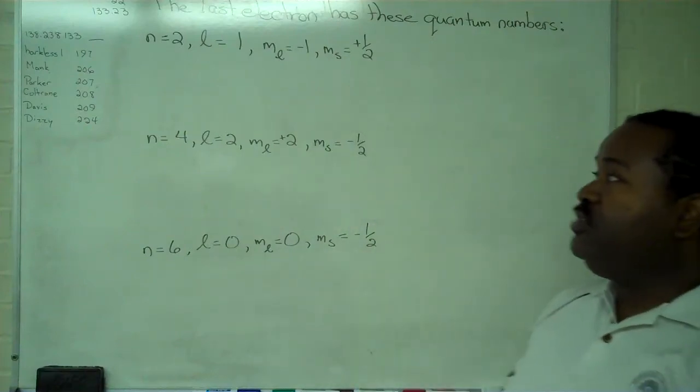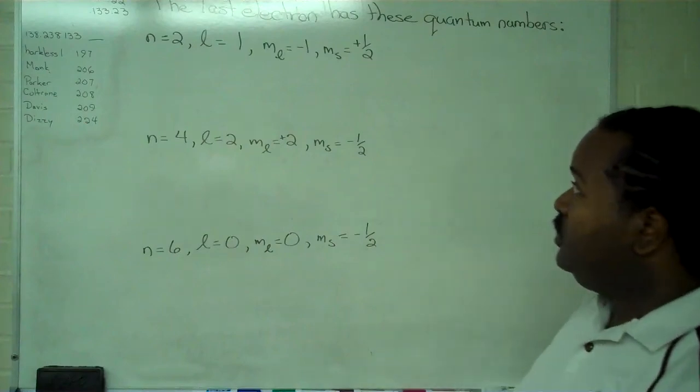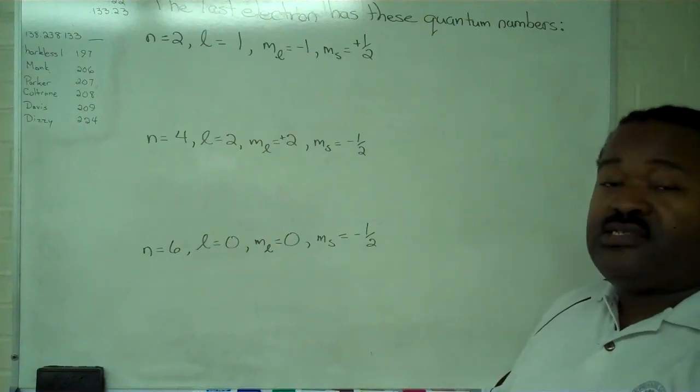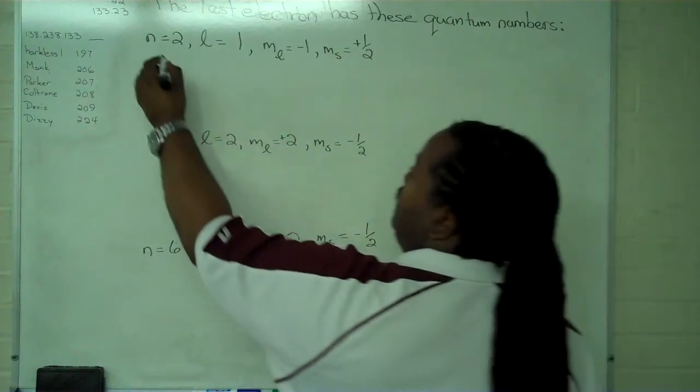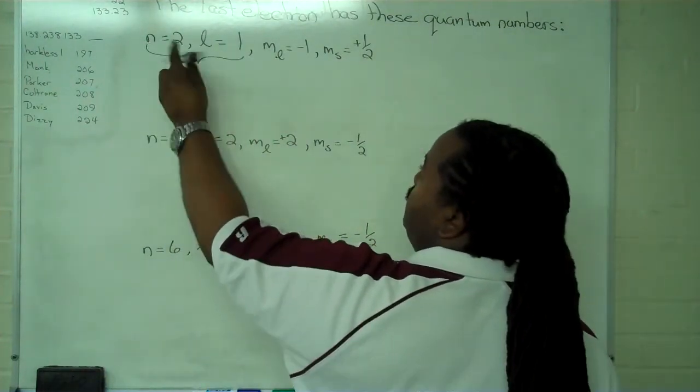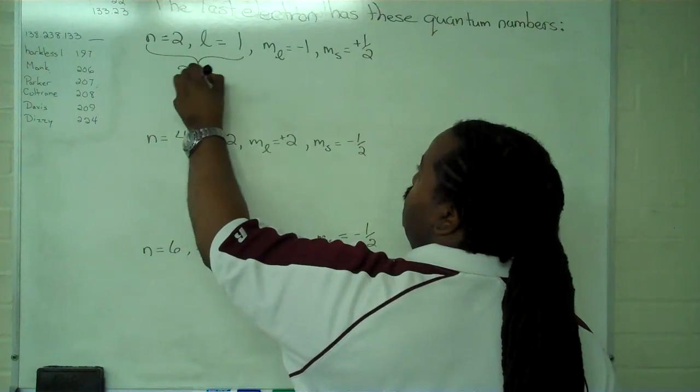So our first one, we have n equals 2, l equals 1, m sub l equals negative 1, and m sub s equals plus 1 half. The first step is to determine the last orbital using the principal and secondary quantum numbers. And in this case, we have a 2p.